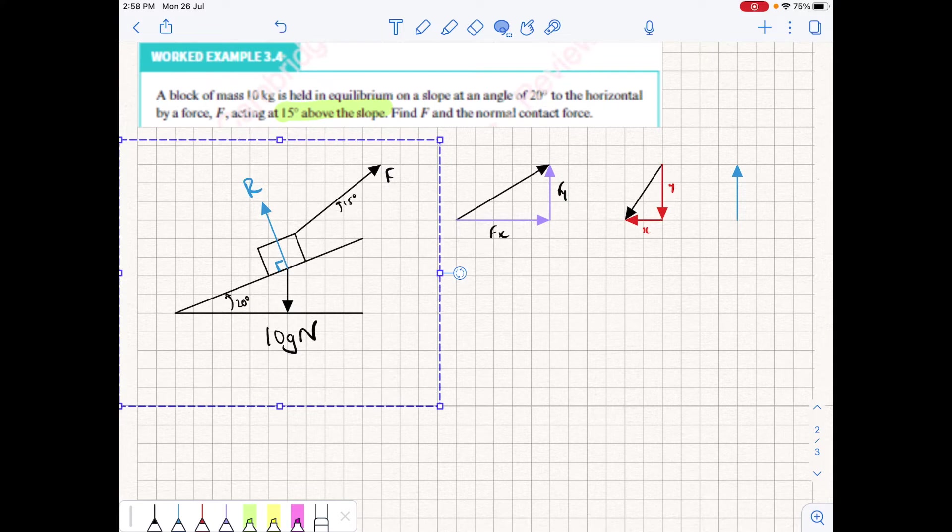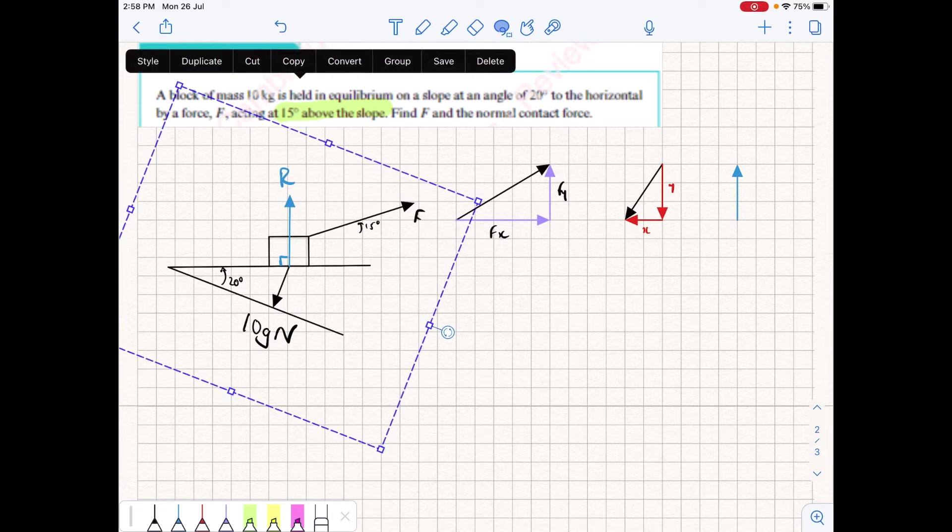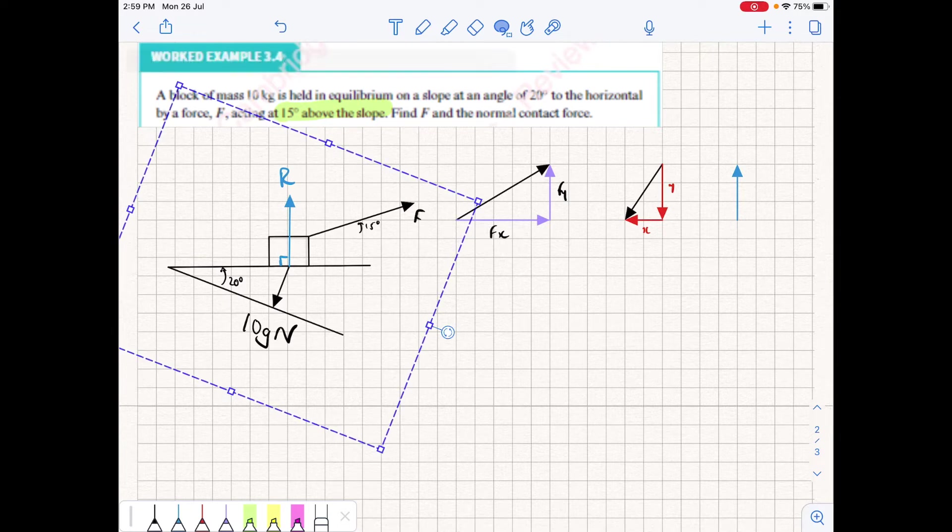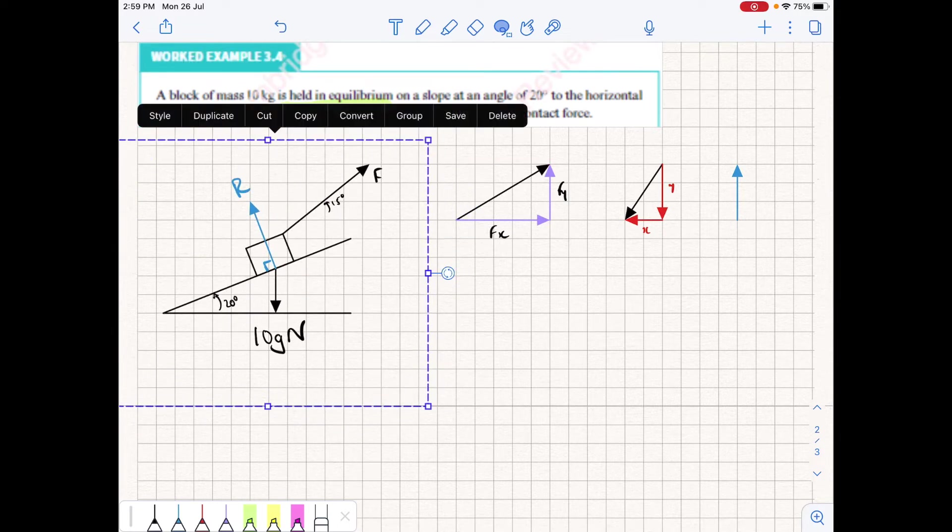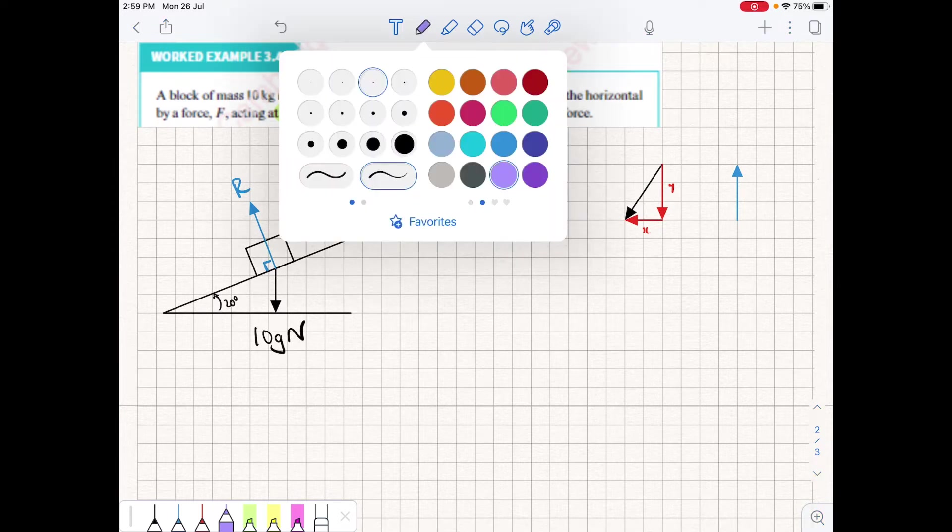Given the information and the way that this diagram is presented, we can see that if we make force R our line of action, in other words the slope itself, it creates a lot of parallel lines and allows us to resolve force R without splitting it up into its components. So the first thing I'm going to do is specify my line of action, and that's going to be parallel to the slope in this question.